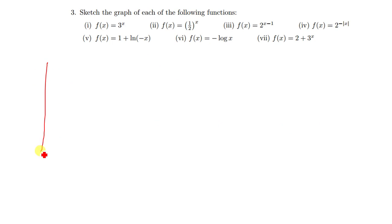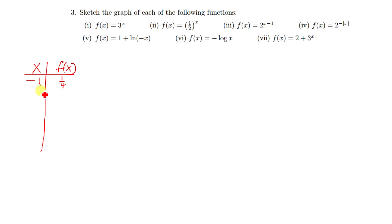Let's quickly move on to the next question. You can also utilize the table of values — you have x and f of x. If x is negative one, we have one-quarter as our answer. If x is zero, we have one-half. If x is one, we're going to have one. If x is two, we're going to have two.